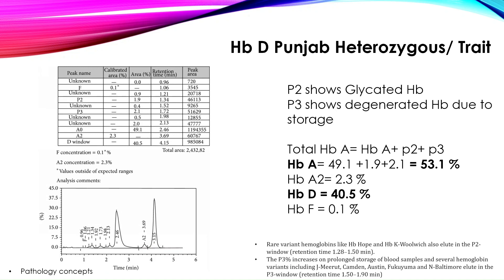Now let's see HbD Punjab heterozygous, or HbD trait. HbA is 53.1%, HbA2 is 2.3%, and an additional peak is observed at retention time 4.15 — HbD Punjab at 40.5%. In HbD heterozygous or trait, the percentage of hemoglobin D is around 35 to 45%. HbF is 0.1%.